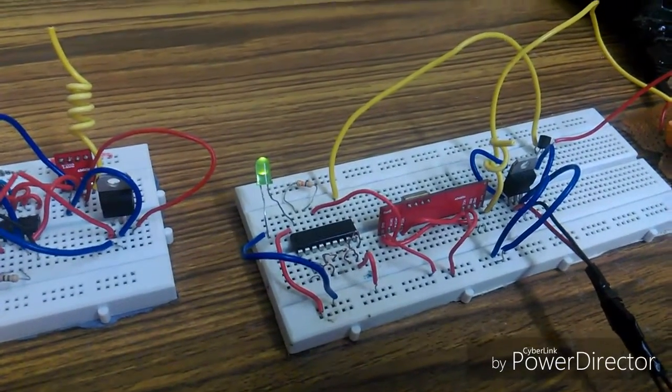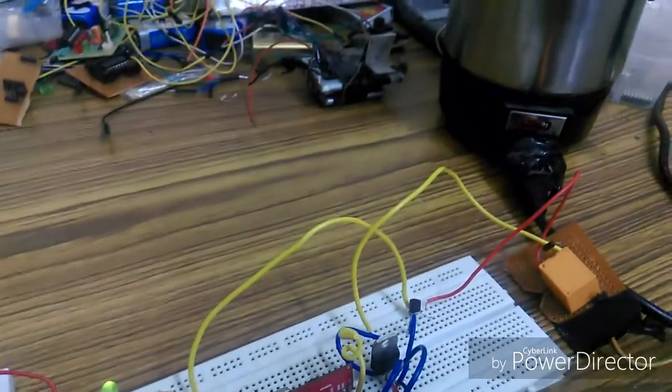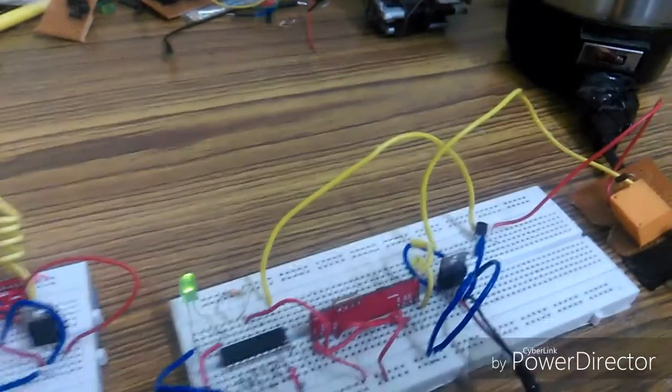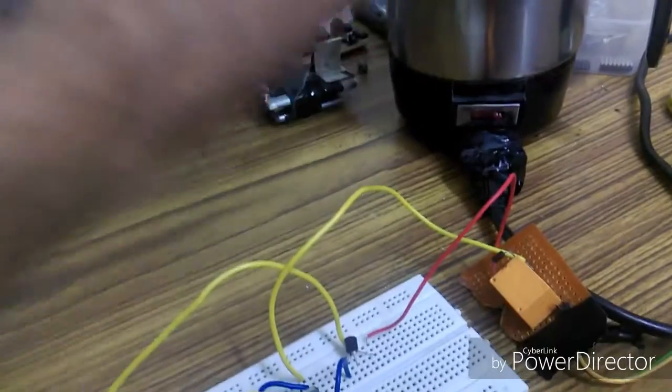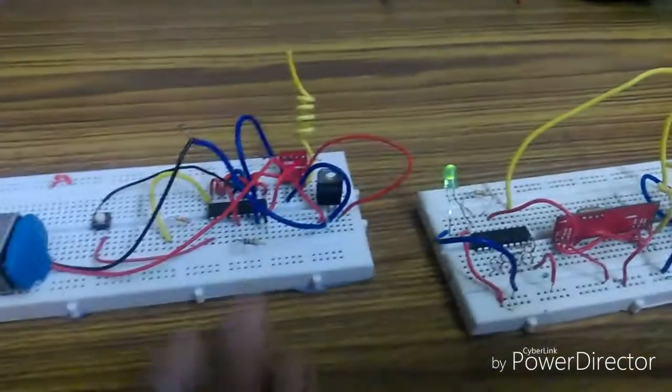Hello guys, in this video I'm going to show you how to control a home appliance with the help of an RF module. There is a kettle that I'm going to control with the help of the RF module. This one is the RF transmitter circuit and this one is the RF receiver circuit.